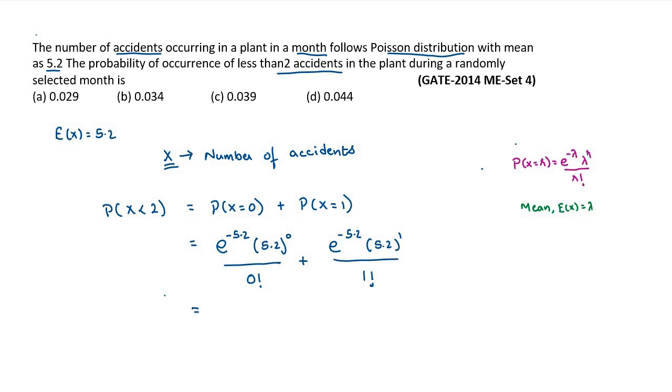Which is equal to e to the power of minus 5.2 plus 5.2 multiplied by e to the power of minus 5.2, which is equal to 6.2 multiplied by e to the power of minus 5.2. Computing this we get 0.034, so the answer is b.